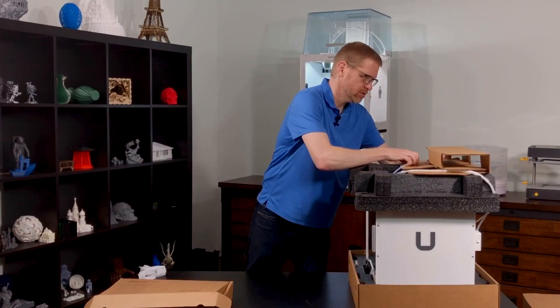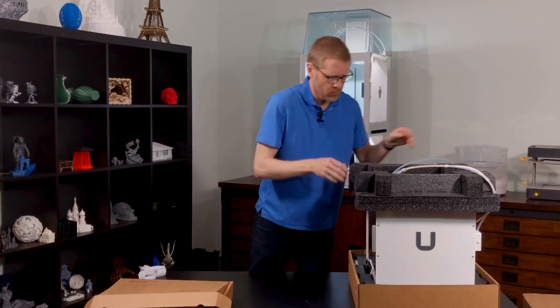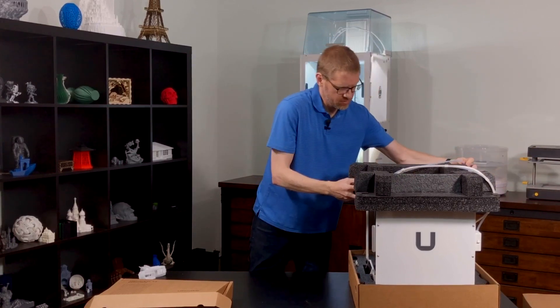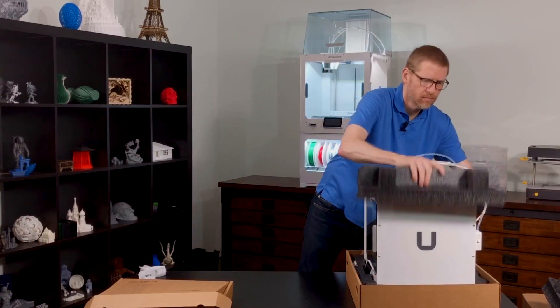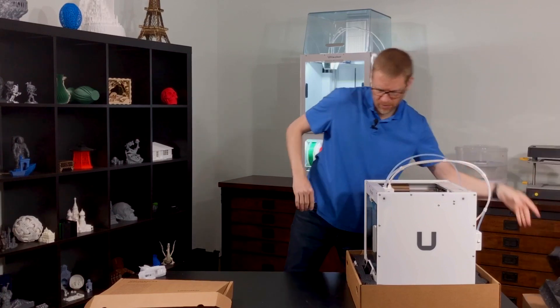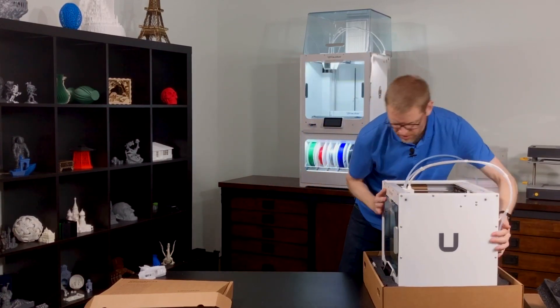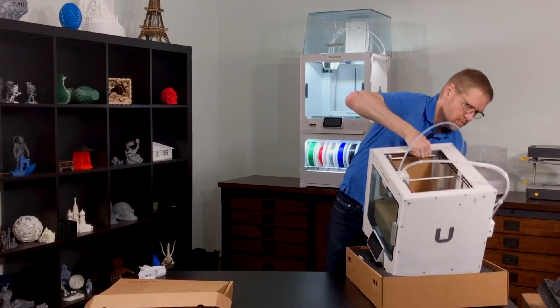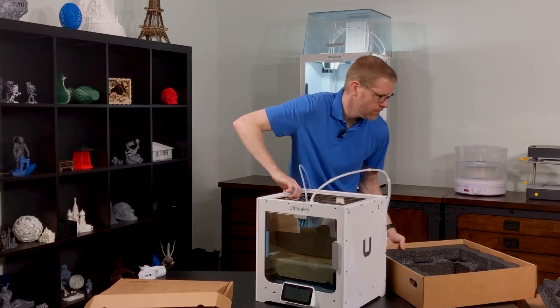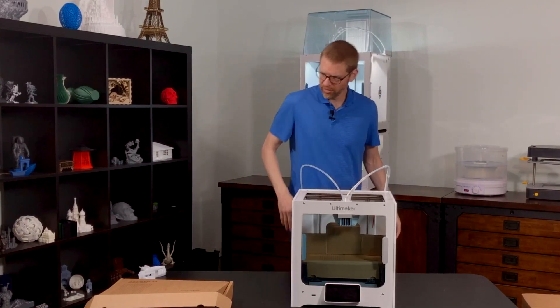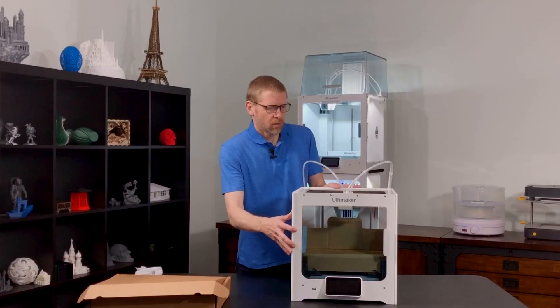Up here we have some other cardboard packing that we'll just remove. Some foam packaging that also comes off. I'll just lift the printer out of here so we can get inside. Let's lift this table up a little bit.